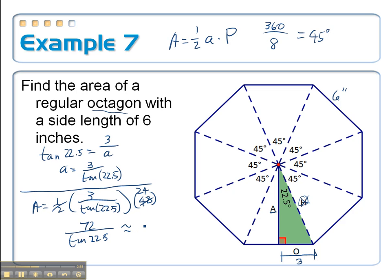Plug this thing into the calculator. You get an approximation. 72 divided by the tangent of 22.5. We get about 173.8 inches squared.